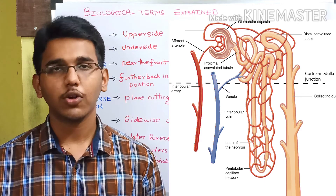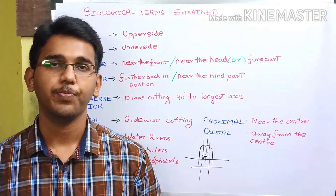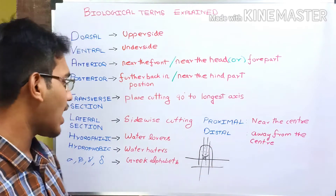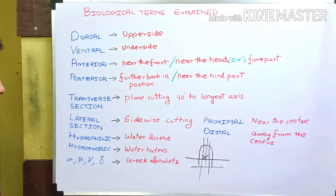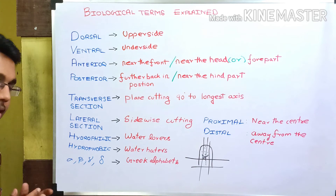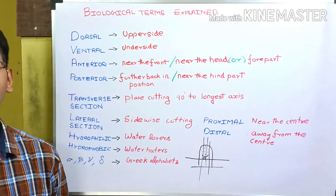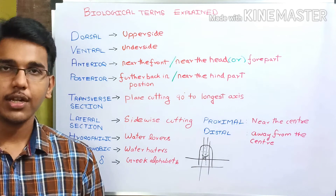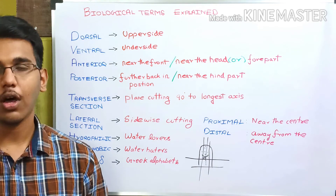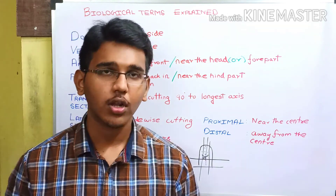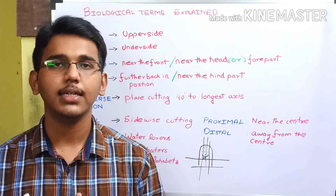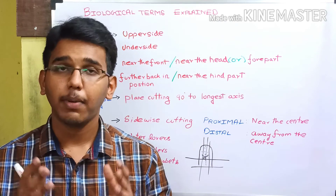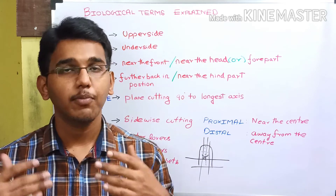So now we are clear with what is proximal and distal. Finally, we have alpha, beta, gamma, and delta — these are Greek alphabets used to mark the position of groups attached to carbon atoms. So now we are clear with all 13 biological terms which are important for understanding biology more easily.